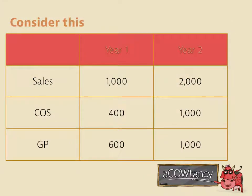Consider this example: in year 1, sales were 1000, cost of sales were 400, and gross profit was 600. If we're auditing year 2 and sales are 2000, we would expect cost of sales to double to 800. But if they've gone to 1000, we automatically know there may be a problem — not that something has been done wrong, but that it's worth auditing. If we don't audit it, we'll look back and wonder why we didn't, because it was obvious cost of sales were higher.